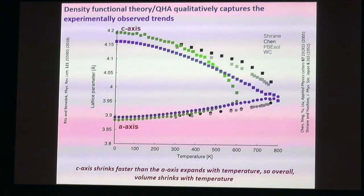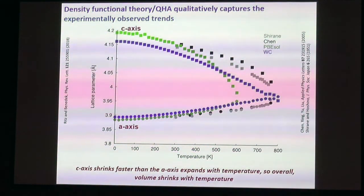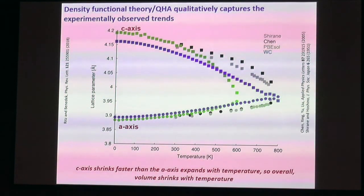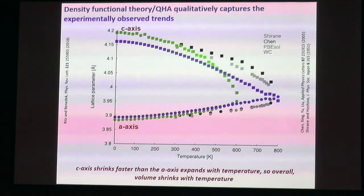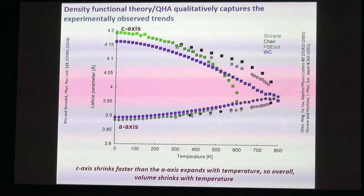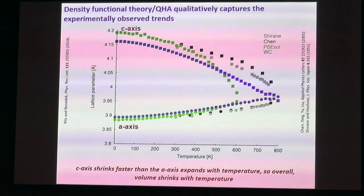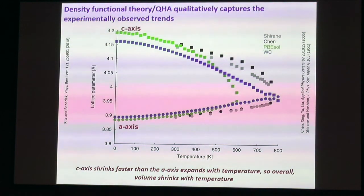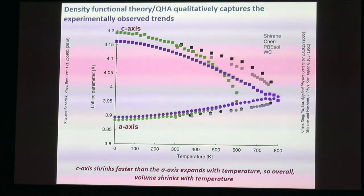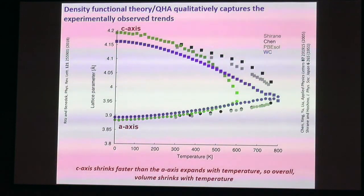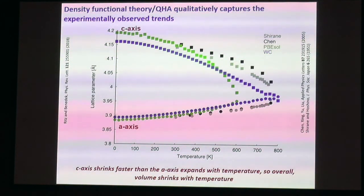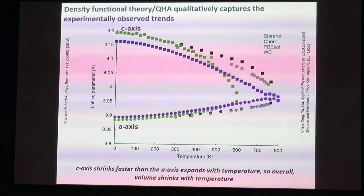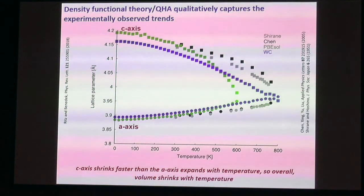Showing data from our calculations for two different functionals, both do a reasonable job of qualitatively capturing the trend in lattice parameters as a function of temperature. We chose to proceed with the Wu-Cohen functional because it does a better job of capturing the structural trends—not surprisingly, since that's what it was designed for.